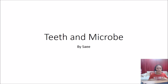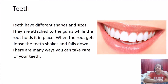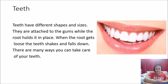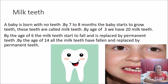Let's start with the first subtopic: teeth. Teeth have different shapes and sizes. They are attached to the gums, while the root holds it in place. When the root gets loose, the tooth shakes and falls down. There are many ways you can take care of your own teeth.